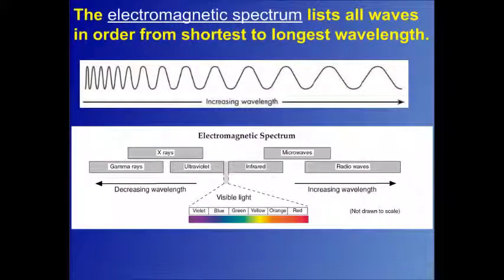The electromagnetic spectrum lists all of the waves in order from shortest to longest wavelength, and this is in your reference table on page 14.